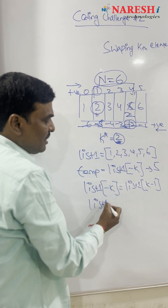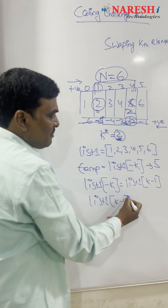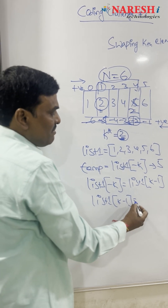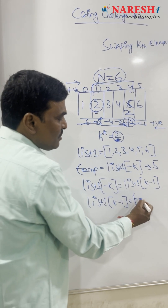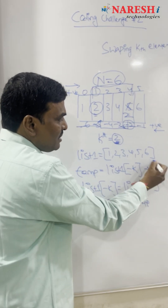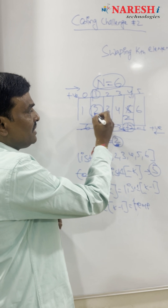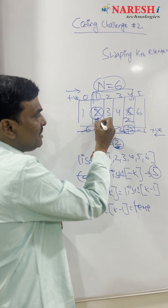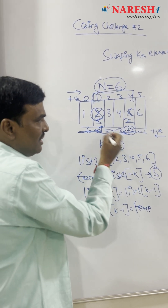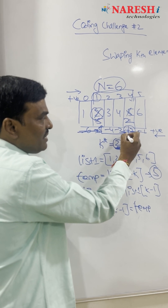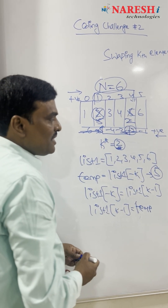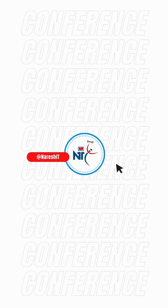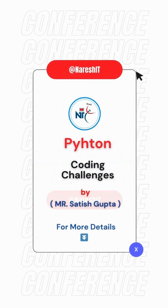Then I set list one of k minus one equal to the value stored in temp, which is five. So the value at the second position from the beginning is swapped with the value at the second position from the end. This is one of the simplest coding challenges. For more information, subscribe to Narachity Shonda.